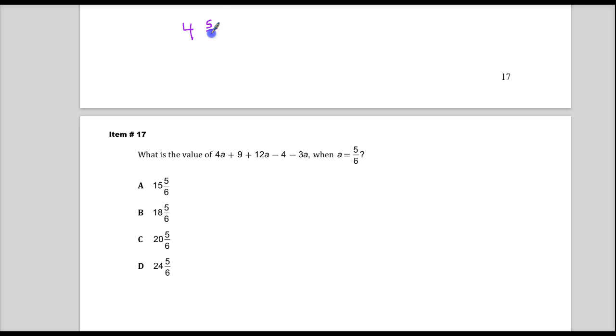So I'll do each individual part separately and then just do the additions and subtractions later. So 4 times 5 sixths. It's really 4 over 1. So you just do 4 times 5 and it gives you 20 over 6. So I'll just do 20 over 6 here. Come back to it later. Plus 9. 12 times 5 over 6. 12 times 5 is 60. Divided by 6 gives you 10. So plus 10 minus 4. Negative 3 times 5 over 6. Negative 15 over 6.